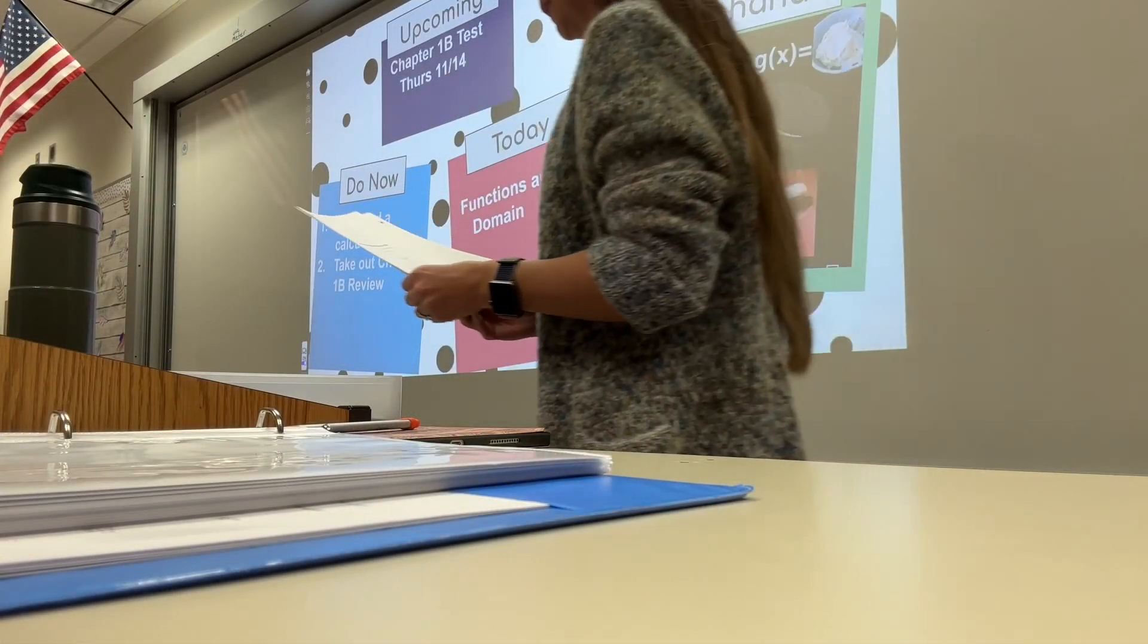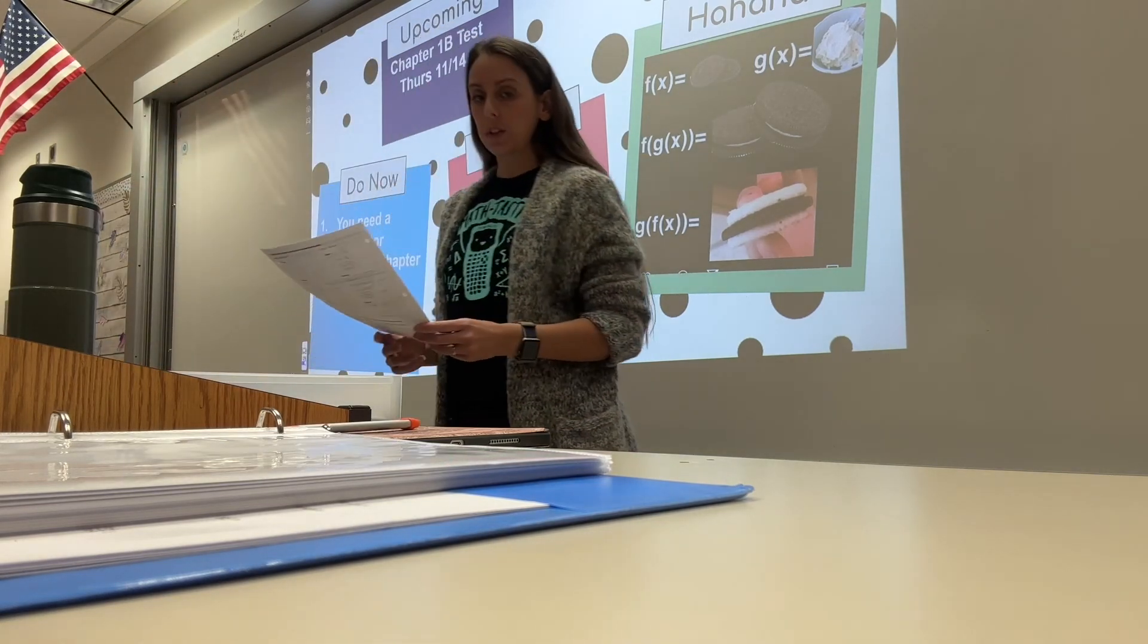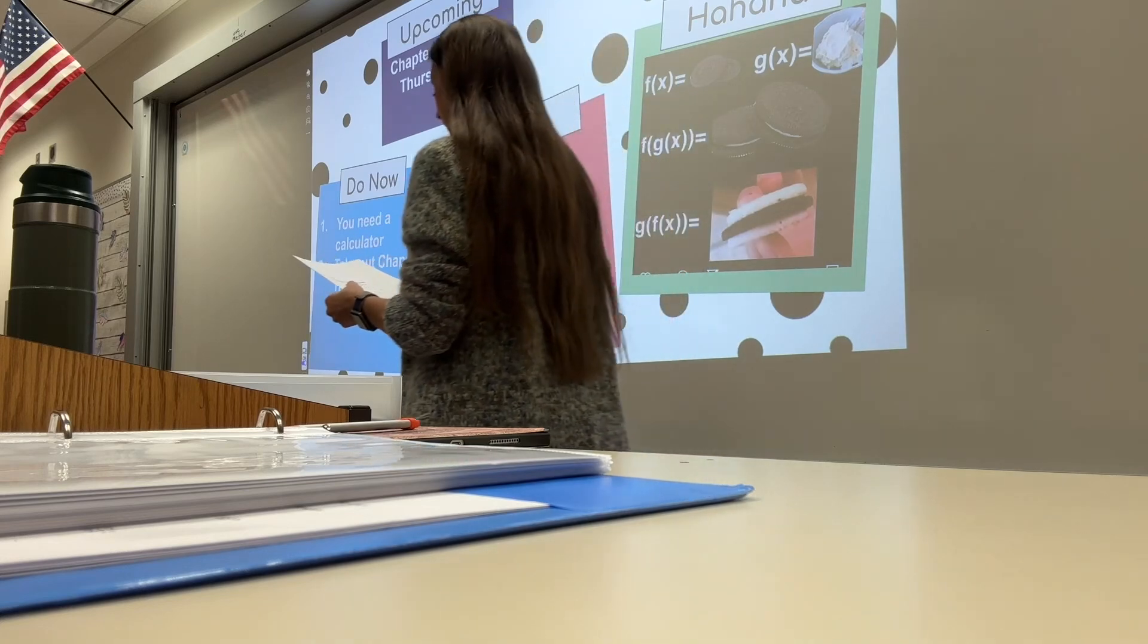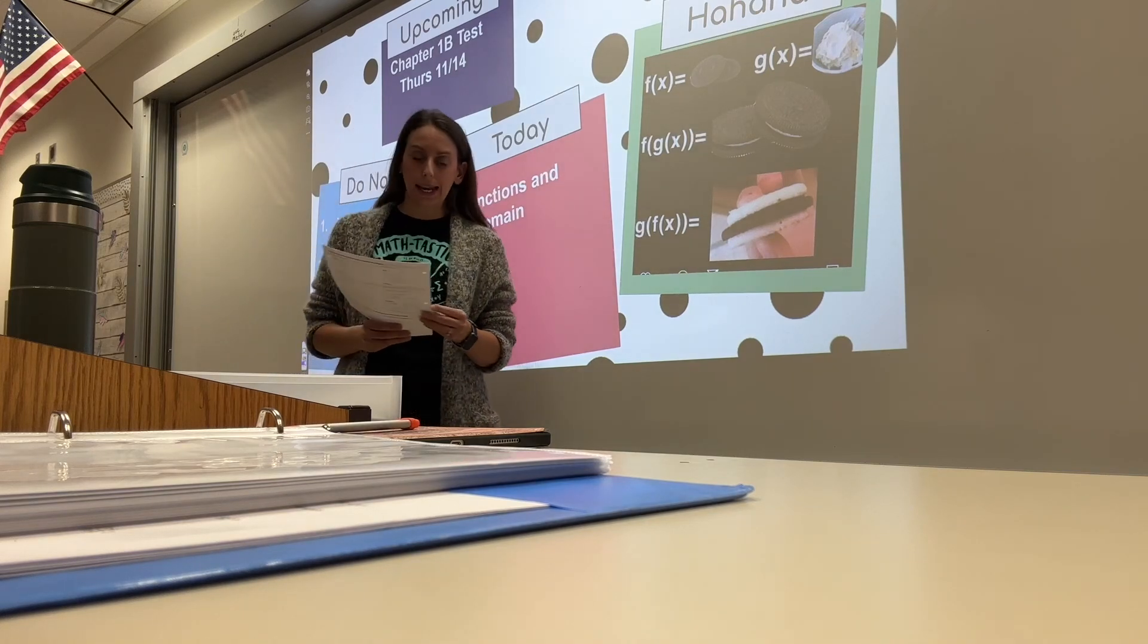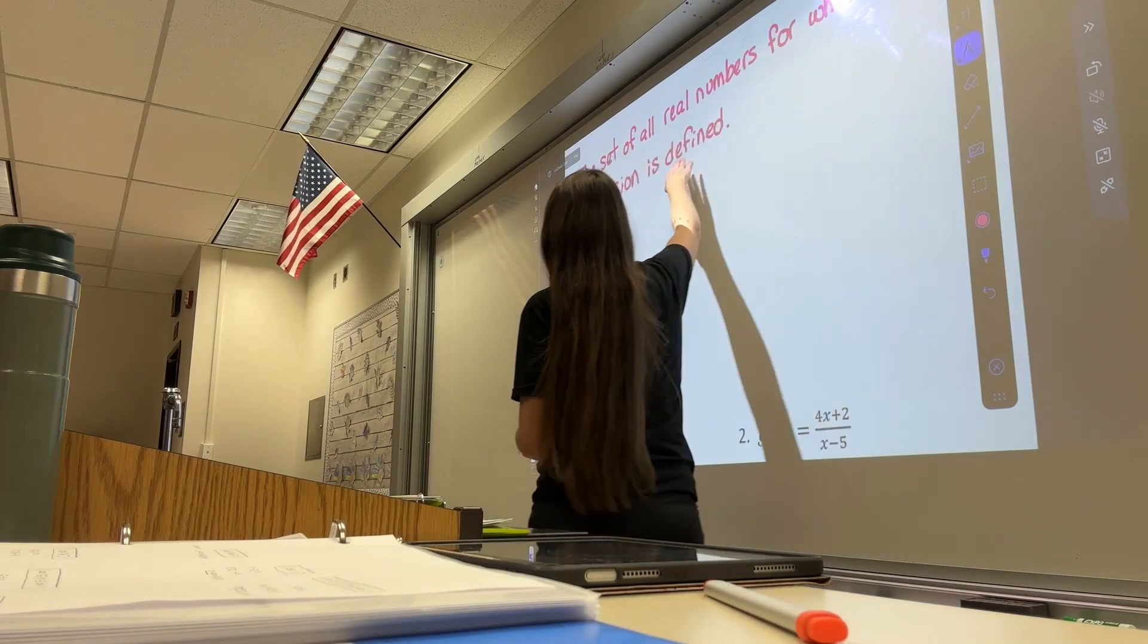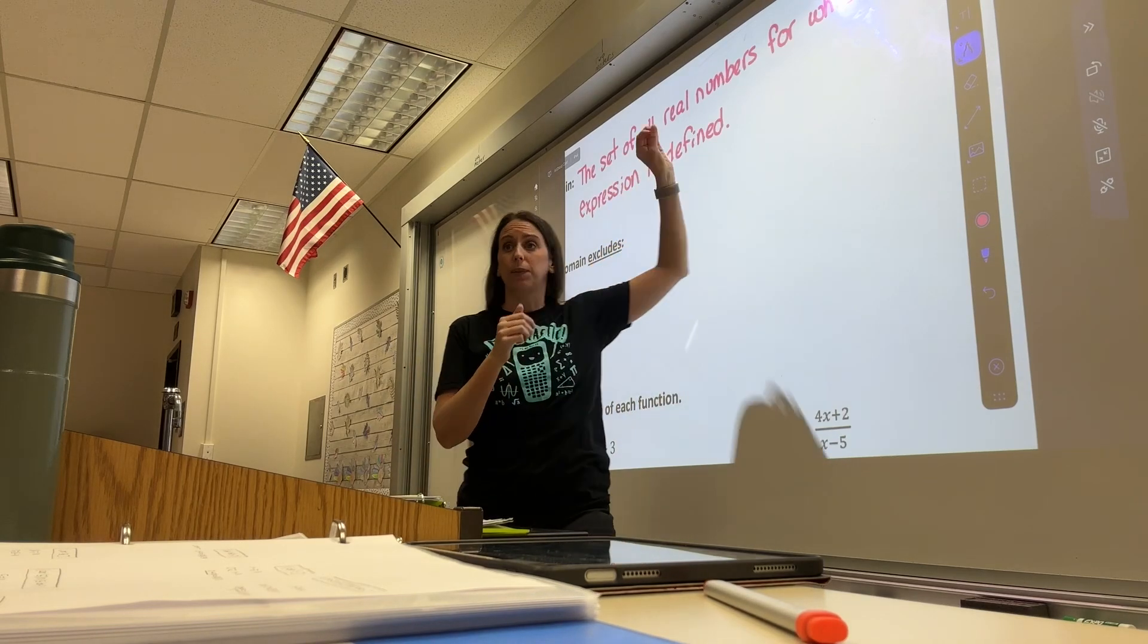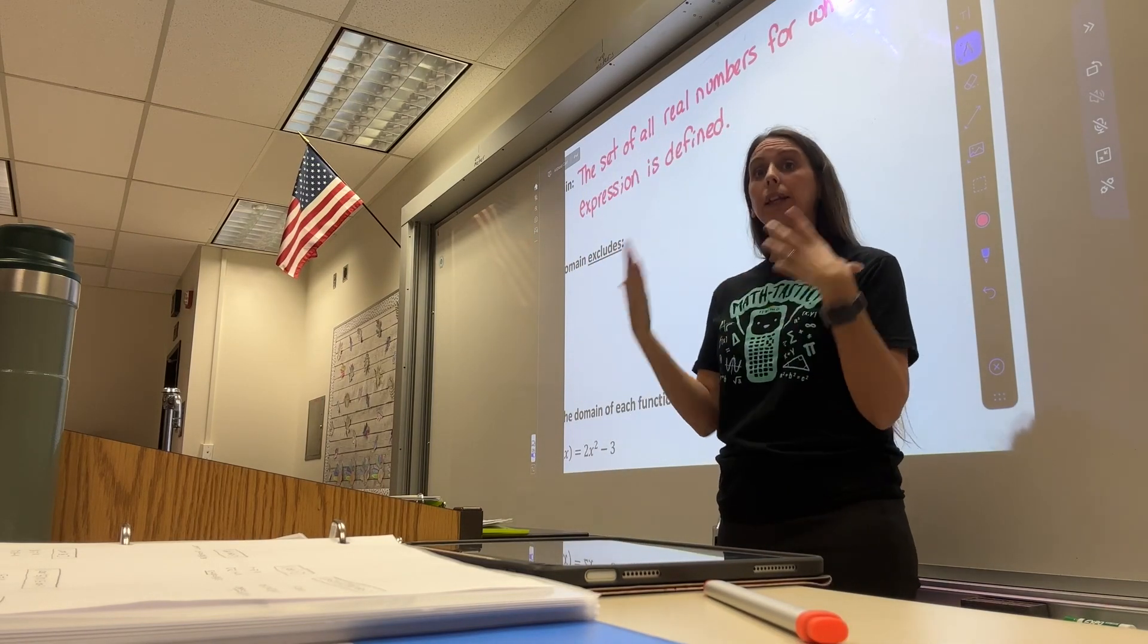Number nine, you're going to get x equals plus or minus 3 over 2i. x equals plus or minus 3 over 2i. Number 10, you're going to get bracket negative 13 comma 7 bracket. Again, bracket negative 13 comma 7 bracket is we're talking the set of all real numbers, so we're looking at no more imaginary numbers right now. Okay, so we're just talking real numbers. So for which the expression is defined. So basically what we're talking about are all of the x values that work in our equations.